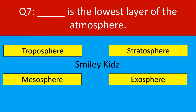Question number 7. Dash is the lowest layer of the atmosphere. Options are: troposphere, stratosphere, mesosphere, and exosphere.